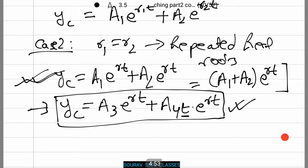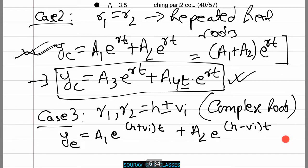Now we will go to an interesting case, that is Case 3. When r₁ and r₂ equal h plus or minus vi, that is complex roots, we can write the complementary equation as yc equals A₁e to the power (h plus vi)t plus A₂e to the power (h minus vi)t. It's that simple.